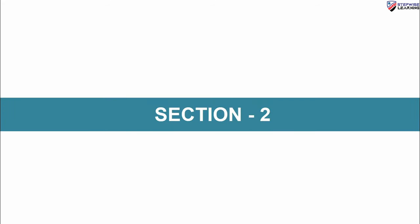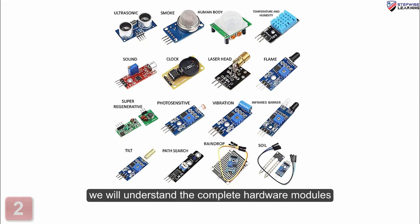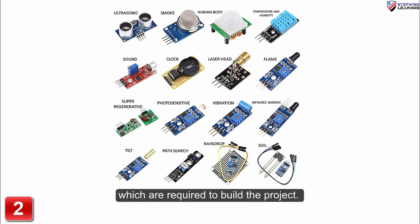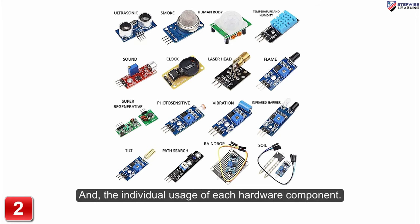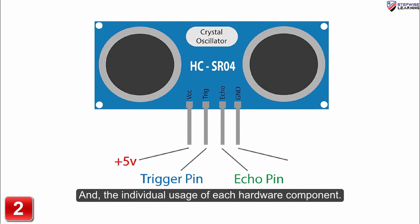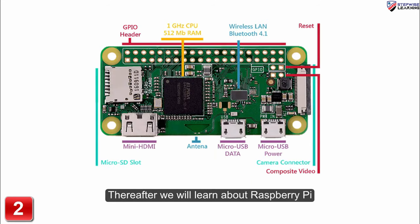In the second section, we will understand the complete hardware modules which are required to build the project and the individual uses of each hardware component. Thereafter, we will learn about Raspberry Pi and its complete specifications in detail.